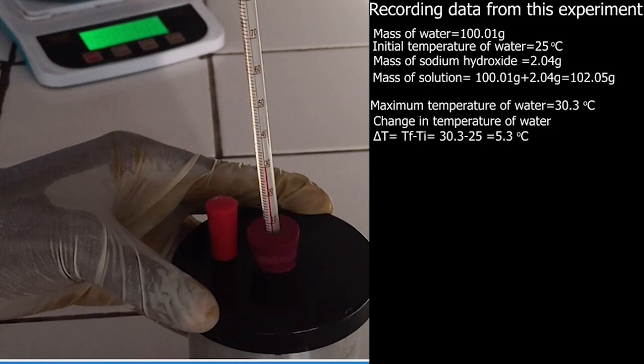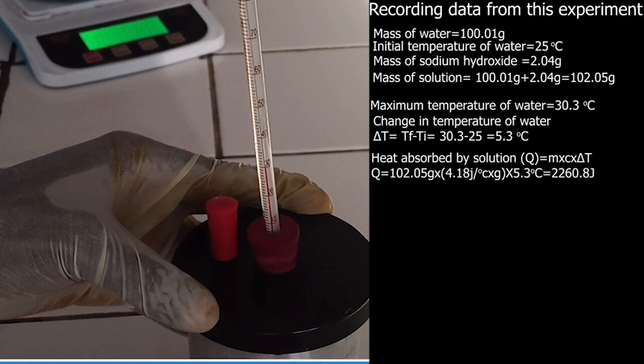The important thing in this measurement is this: the heat released by dissolving ionic substance is equal to heat absorbed by solution. Pay attention, I want to repeat: the heat released by dissolving ionic substance is equal to heat absorbed by solution. Heat absorbed by solution in this experiment is calculated by the formula below.